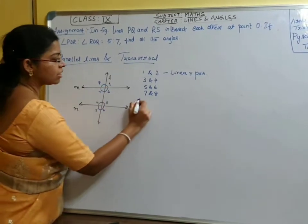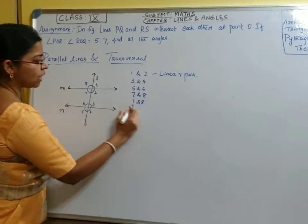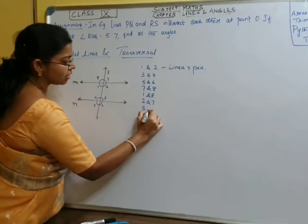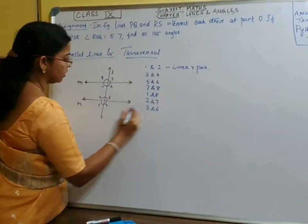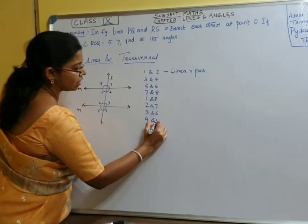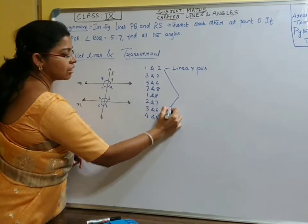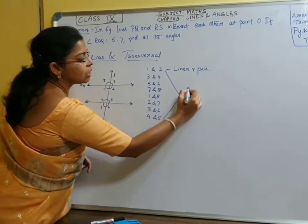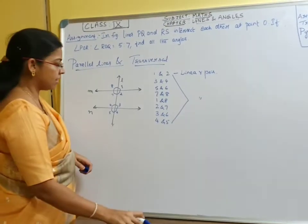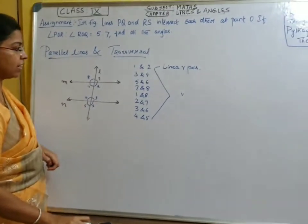What about angles one and eight? And two and seven, three and six, four and five — what are these? They are all linear pairs — linear pair angles formed on the straight line.